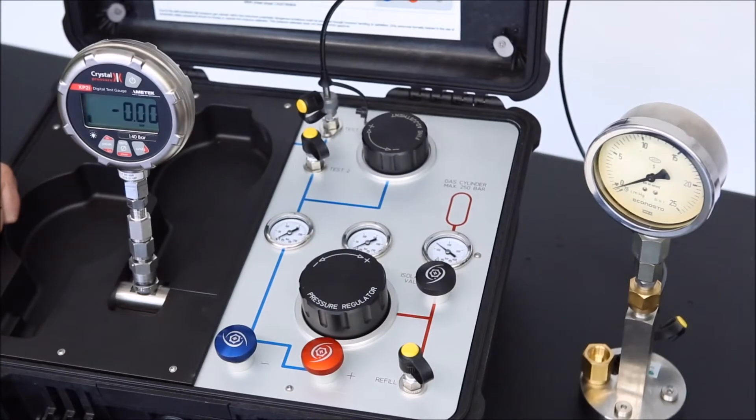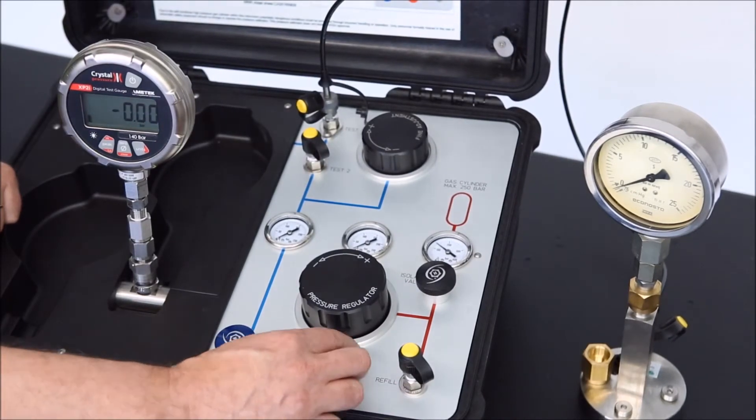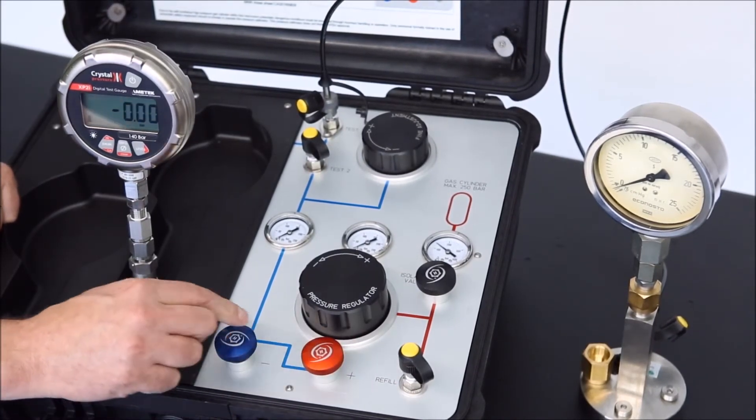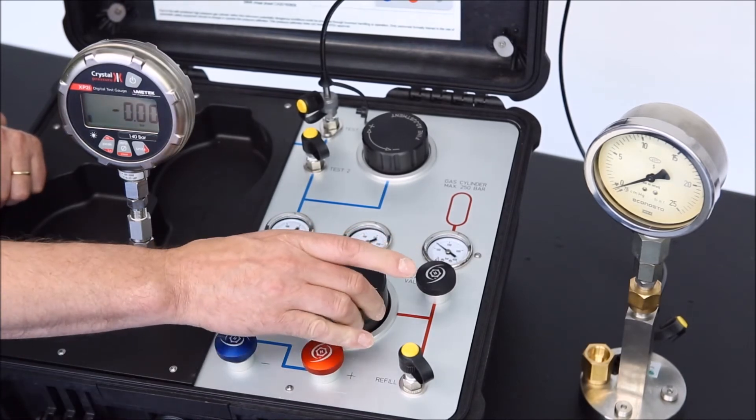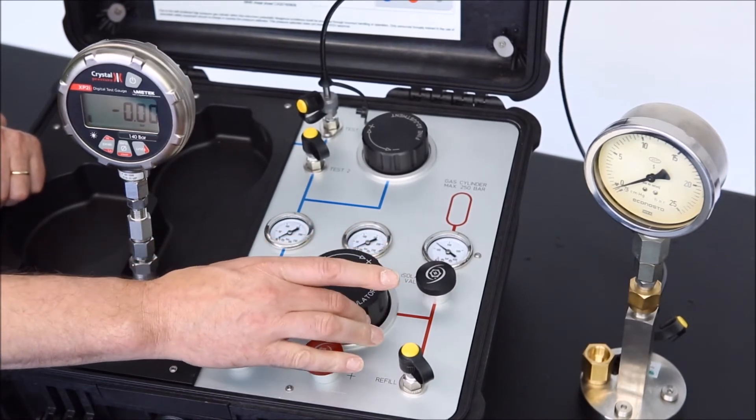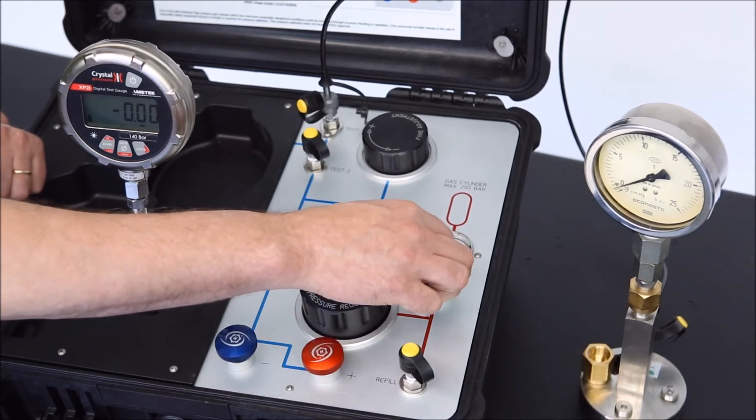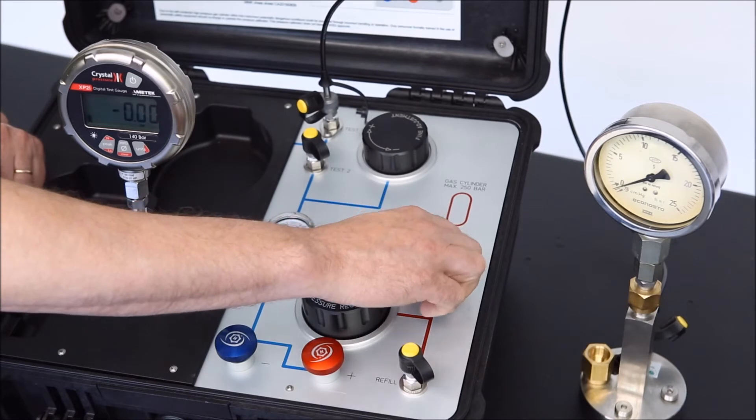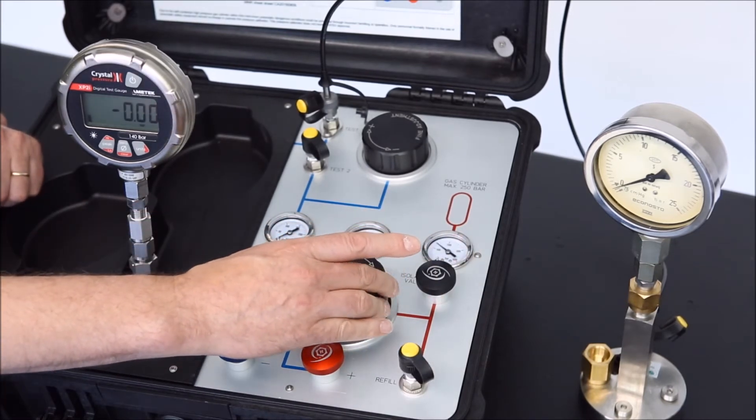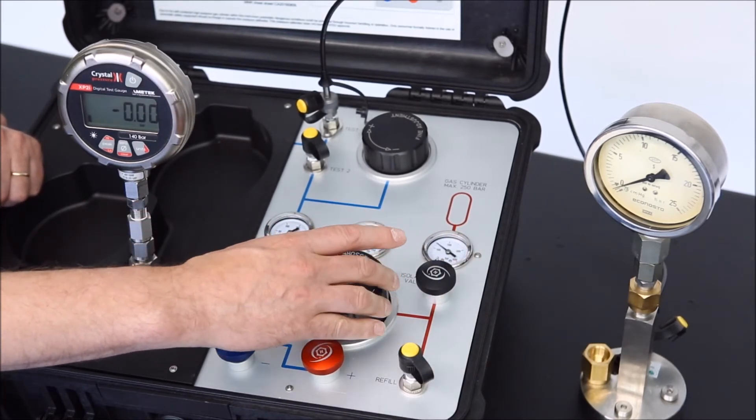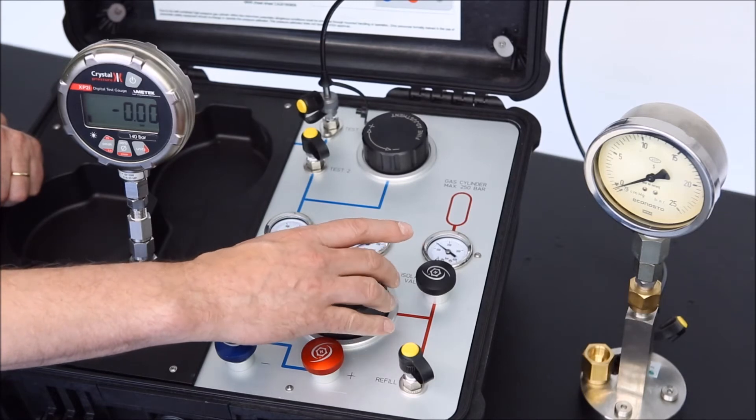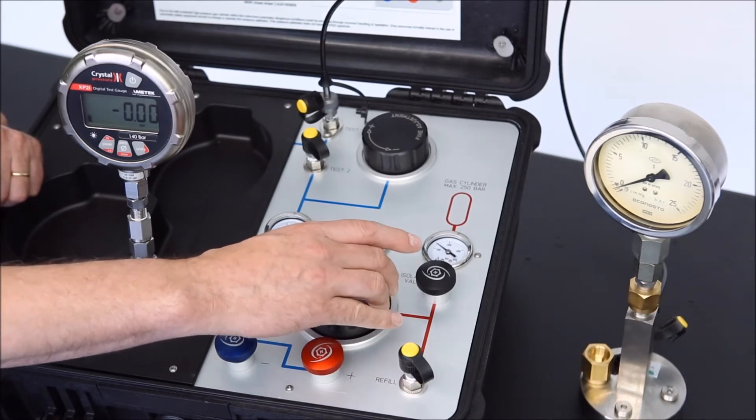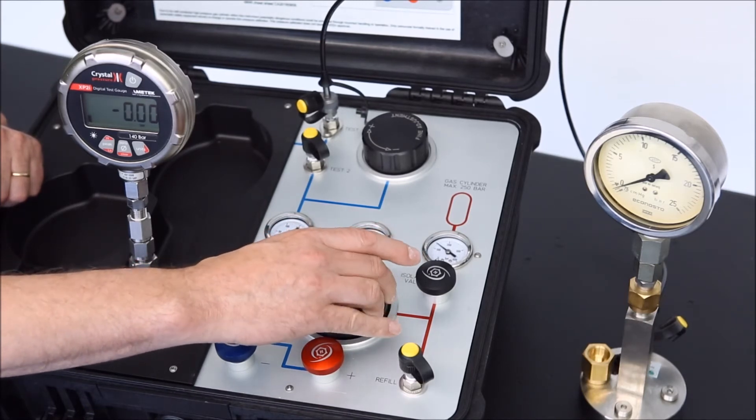First of all I will make sure my up valve is closed, vent valve is still open, and pressure regulator is rotated fully counterclockwise. Now I am carefully opening my isolation valve and manipulating my pressure regulator until my regulated pressure is roughly 15 bars. A little bit higher.